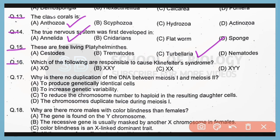Question 16. Which of the following genotypes is responsible for causing Klinefelter syndrome? Correct answer is option D. XXY is responsible for causing Klinefelter syndrome.